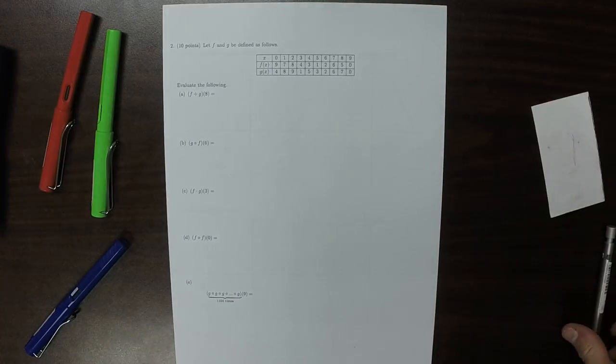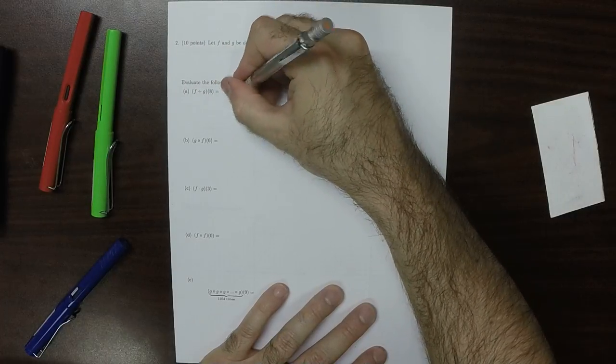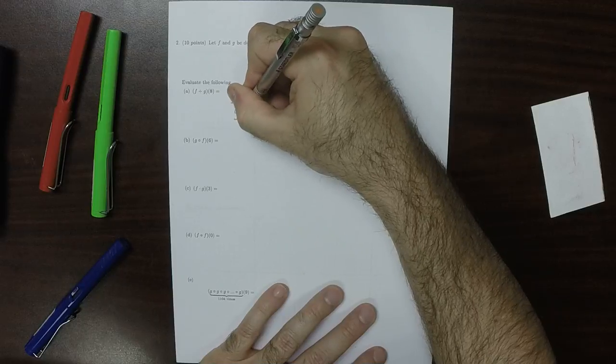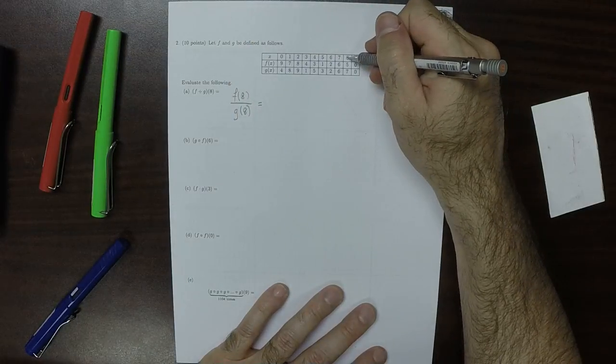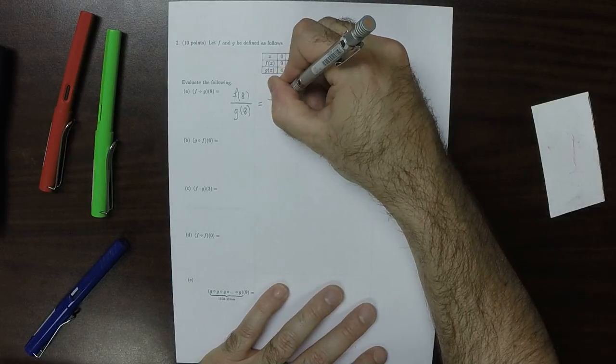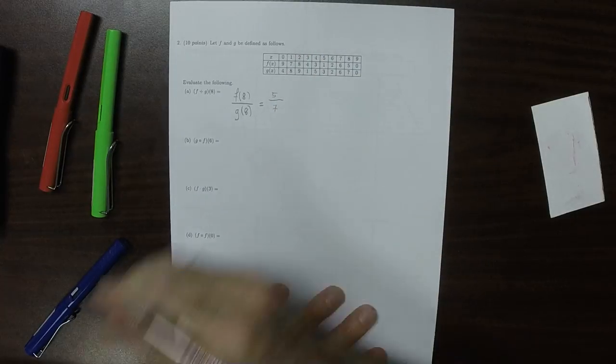For question 2, well, that is by definition F evaluated at 8 divided by G evaluated at 8. So if we plug in 8, we get 5 for F, and we get 7 for G.